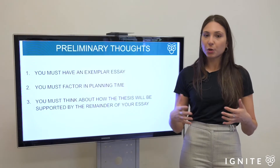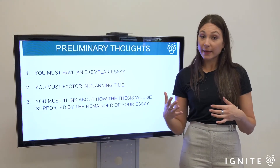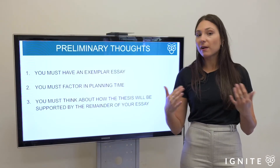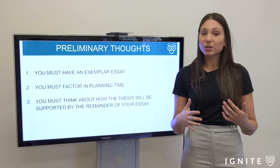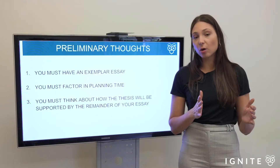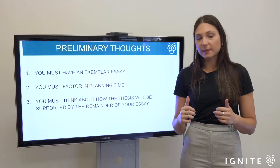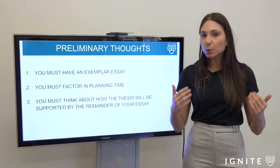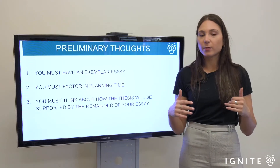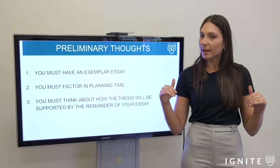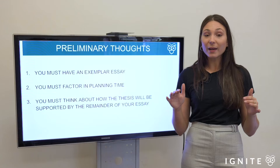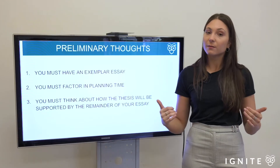Thinking about the papers more broadly: in Paper 2, a 20-mark essay is typically given 40 minutes. In Paper 1 you have 45 minutes per section, but I think the comprehension section is more difficult, so plan to spend 50 minutes on comp and 40 minutes on the essay. The process of unpacking the question's key terms and thinking about how to frame your thesis takes time, so you need to know your exemplar essay can be written in under 35 minutes.